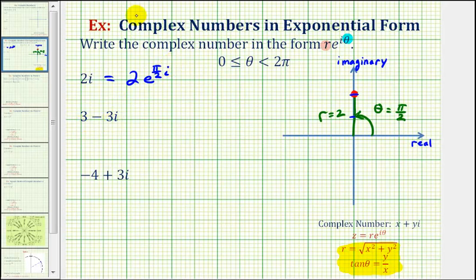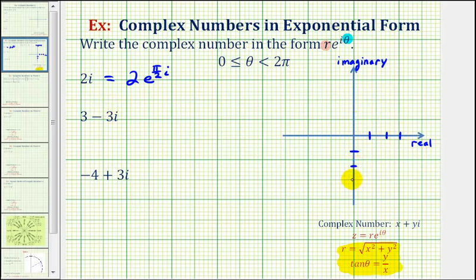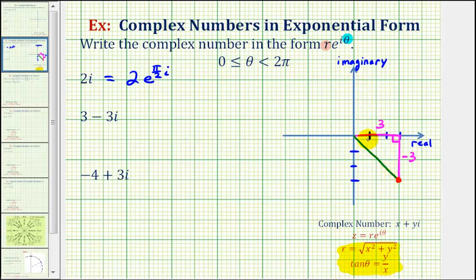Next we have three minus three i. Let's plot this complex number — positive three on the real axis, negative three on the imaginary axis. The length of this segment would be r. Let's sketch the reference triangle: we can label one leg positive three and the other leg negative three. Because both legs have a length of three units, we recognize this as a 45-45-90 reference triangle, where the reference angle is pi over four radians.